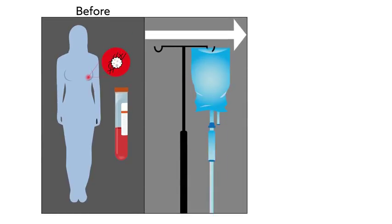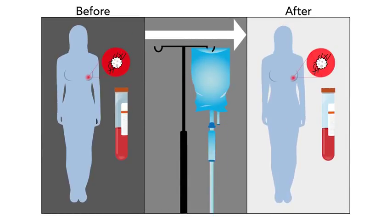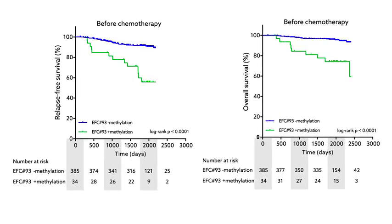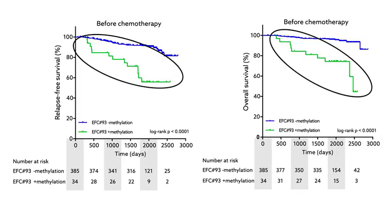The team also studied blood samples from women with breast cancer before and after chemotherapy. The results showed that the treatment was far less effective for women with EFC #93 methylation, who were more likely to experience relapse and death than those without the marker.